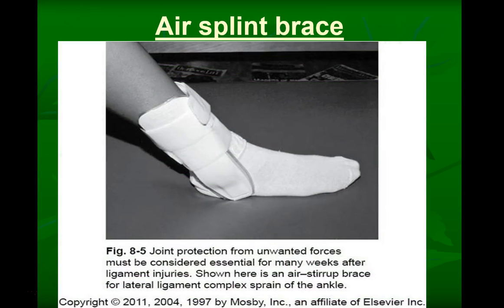The air splint or stirrup brace is pretty generic and off the shelf. Support is on the lateral side, and most brands also have medial support, making them useful for medial sprains too. It doesn't do a whole lot, but it does check that motion and reduces the likelihood of rolling the ankle again while wearing it.